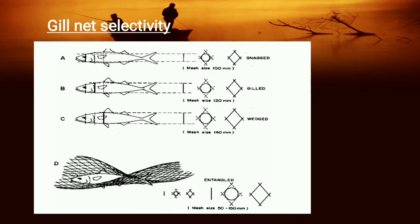So the processes are snagging, gilling, wedging, and entangling. Entangling means some part of the body is trapped in the mesh. It is called entangling or tangling, where the fish has not necessarily penetrated a mesh but is caught in the net by teeth, maxillary, or other projections.